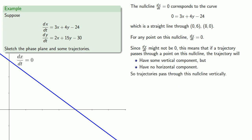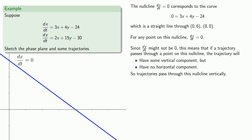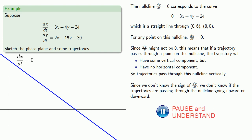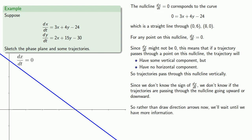Trajectories pass through this null cline vertically. In previous problems we'd drawn the direction arrows, but since we don't know the sign of dy/dt, we don't know if the trajectories are passing through the null cline going upward or downward. So rather than draw direction arrows now, we'll wait until we have more information.